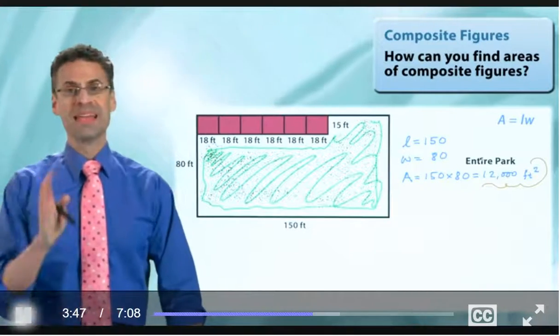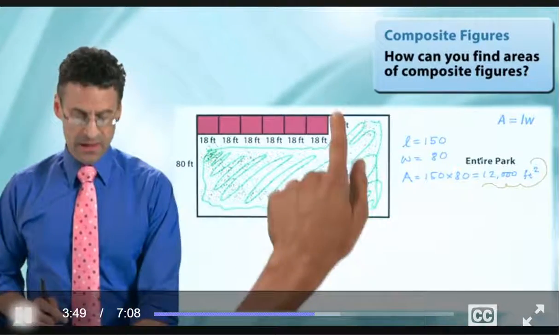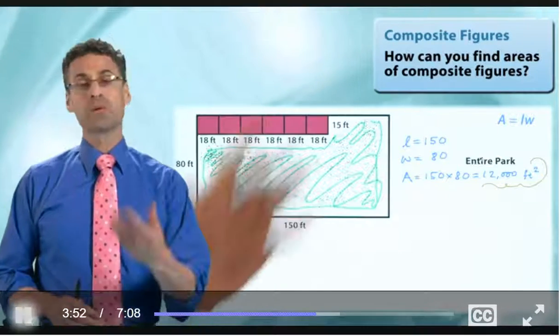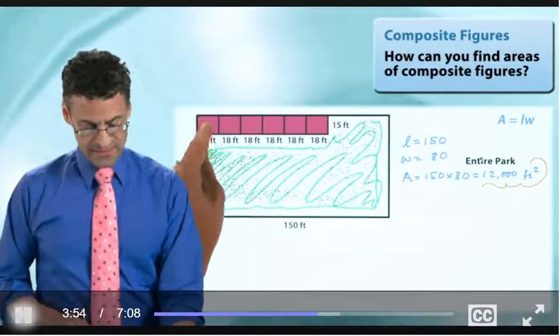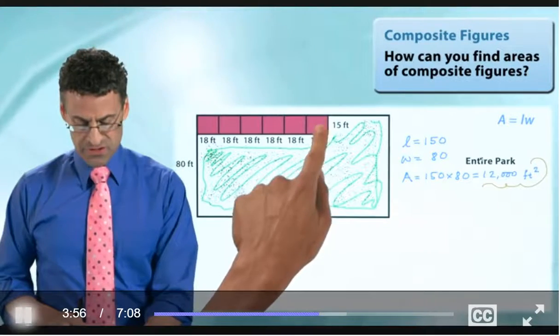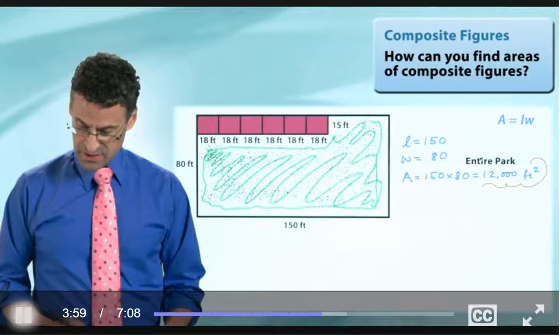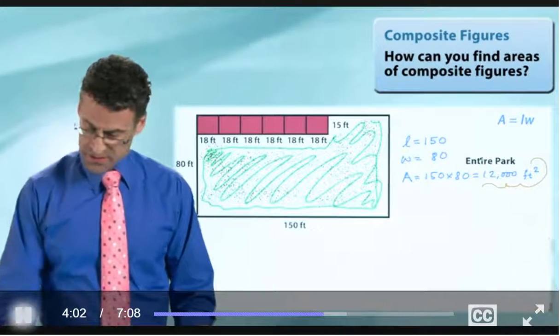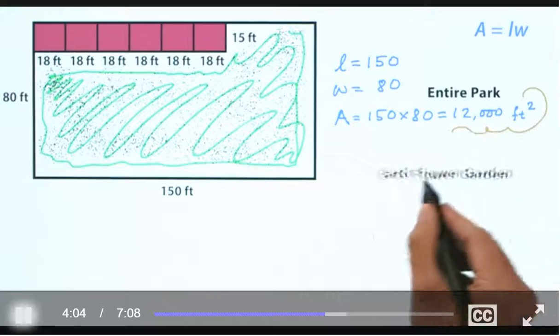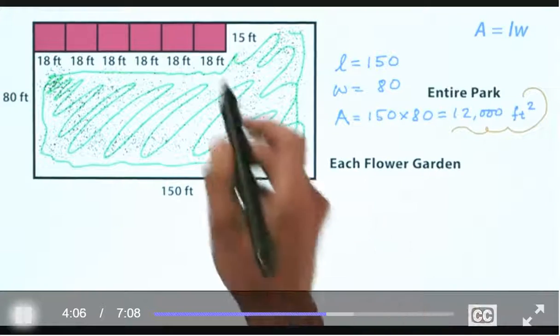Great. Now, let's see if we can find the area of all those flower gardens. The way we're going to do it is, since each one is itself a rectangle, let's find the area of just one flower garden and then figure out how to find the area of all of them together. So now let's figure out the area of just each flower garden on its own.